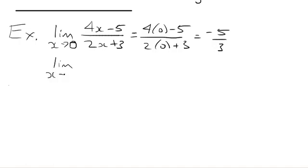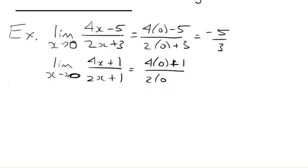Same sort of thing happens if I have something like, say, 4x plus 1 over 2x plus 1 as x goes to 0. Again, I can just plug in x equals 0 because I don't have 0 in the denominator when I do that. So this is just 1 over 1, which gives me 1 for my limit.